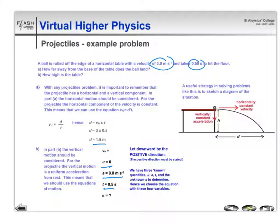We're being asked s, we know u, a and t, so we can use our s equals ut plus one half a t squared equation, and we get s is 1.23 meters.